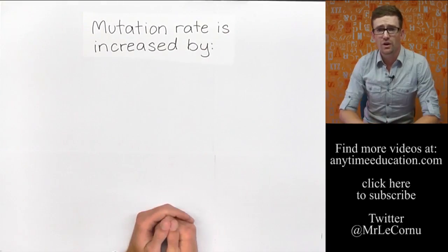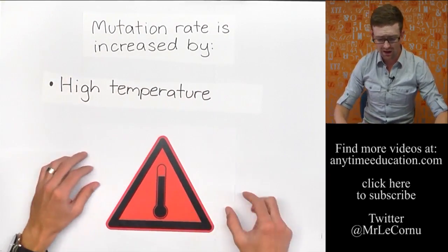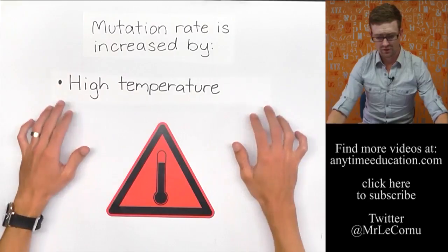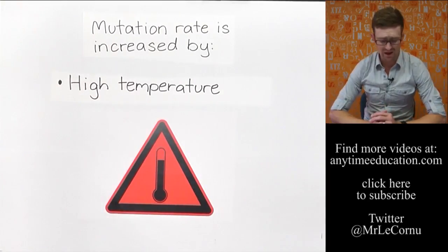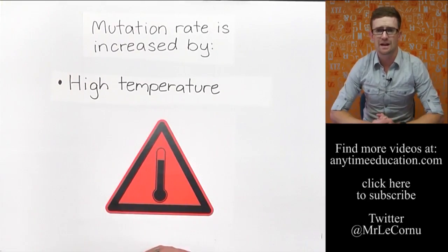The third and final factor that can increase the rate of mutation is temperature. Temperature needs to be very high temperature, but high temperature is capable of causing mutations in DNA, and that rounds out our three factors.